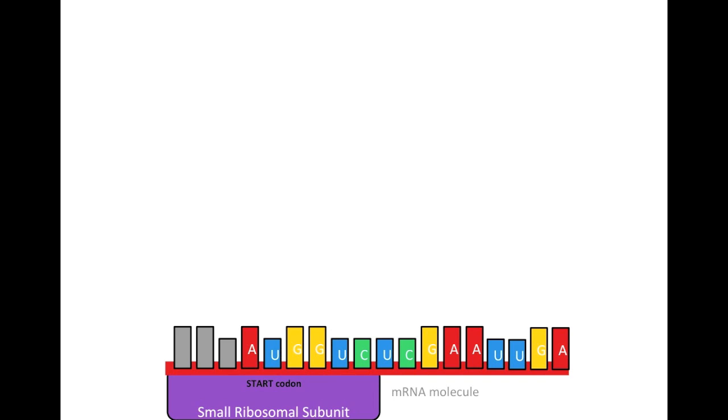Following the binding of the small ribosomal subunit, the first tRNA, or transfer RNA, molecule will be introduced. The first tRNA molecule, like all of the following, will contain an anticodon sequence, which binds by complementary base pairing rules to the codon sequence on the mRNA molecule.